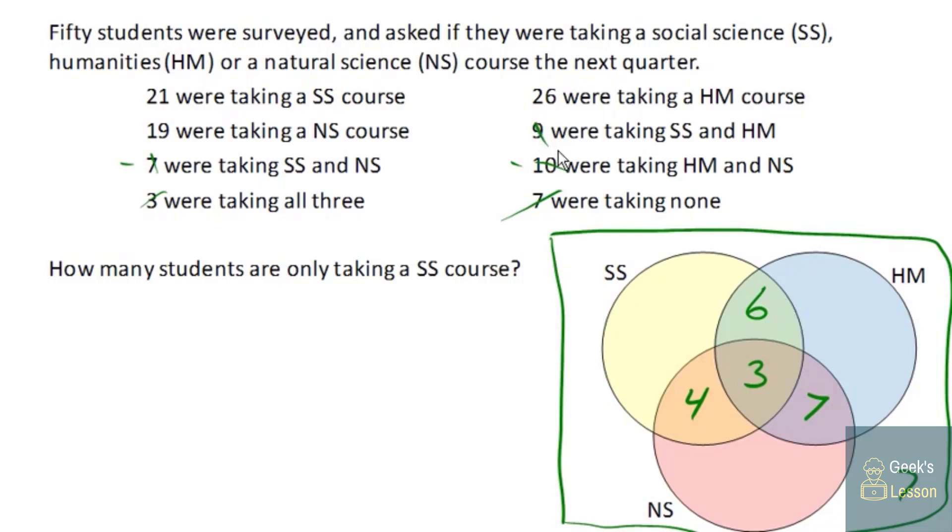Now, we can say we had 21 students taking a social science class. We have six and four is ten plus three more is 13 students here. So we got 13 students already accounted for. So 21 minus those 13 students leaves us with eight students for this region here. And that lets us answer our question. There are eight students taking only a social science class.